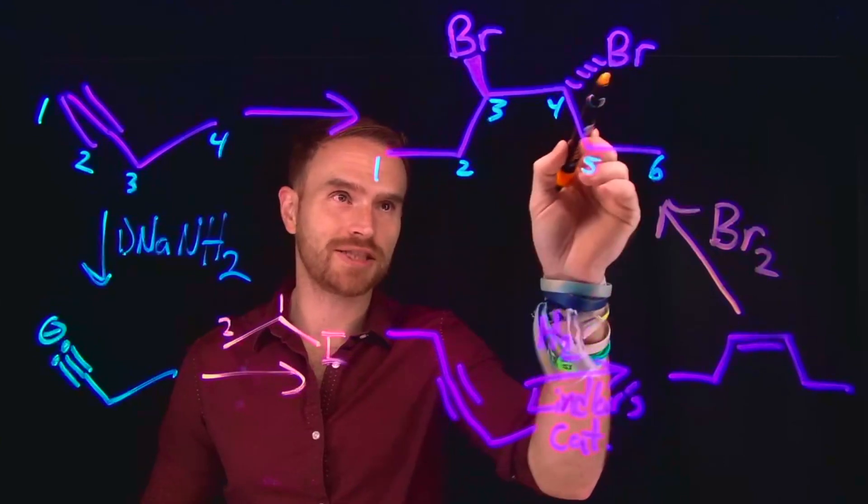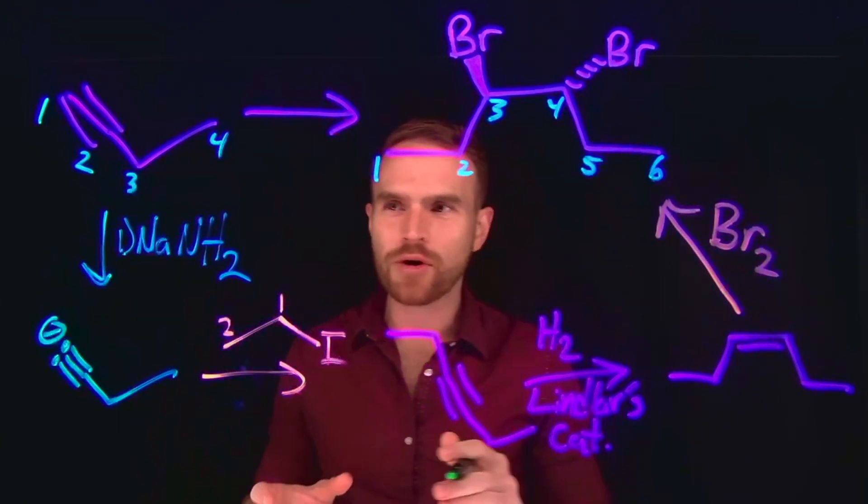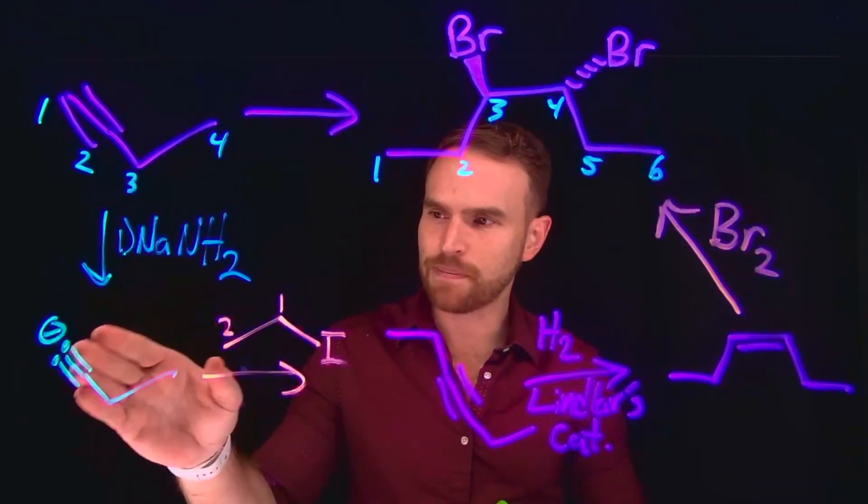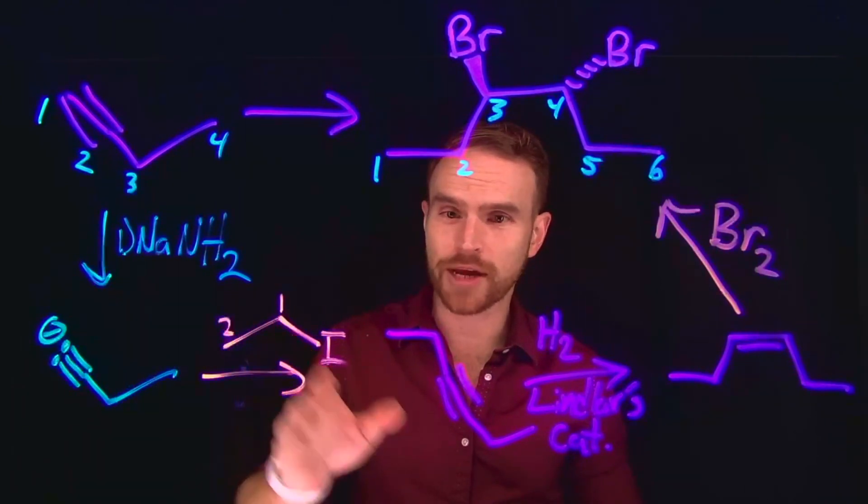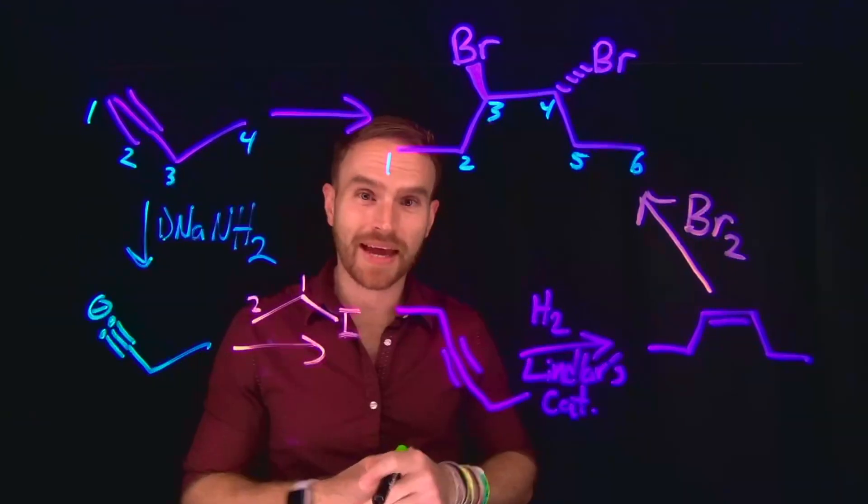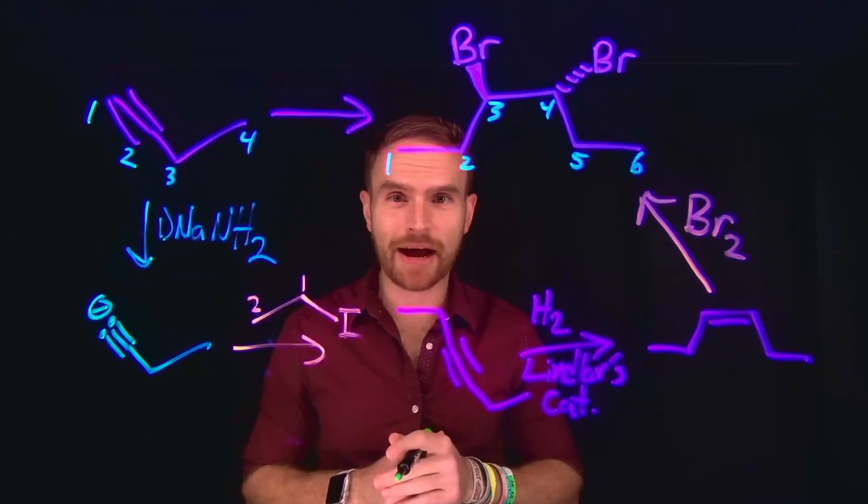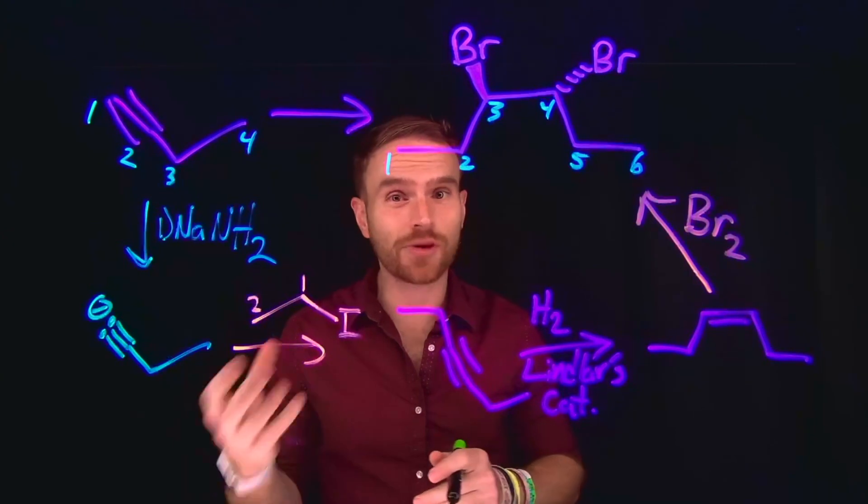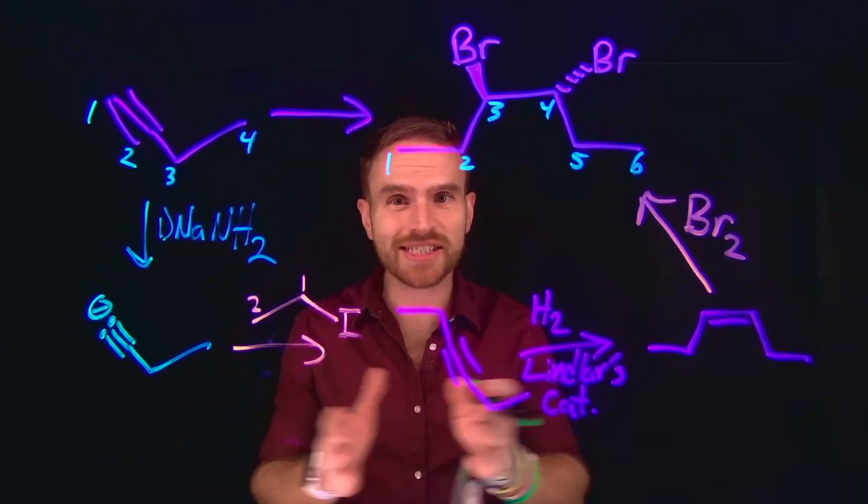And now we're just one step away from our final product, because all we need to add is bromine gas to do this trans-bromination. So notice how important the first step of deprotonating the alkyne to do an alkylation reaction is in extending the carbon chain. This gave us two additional carbons. And that's really the power of alkyne alkylation reactions, because it provides an organic chemist an opportunity to extend the carbon chain.